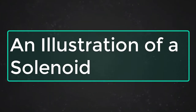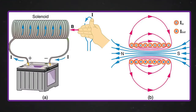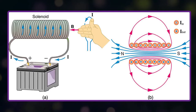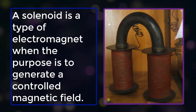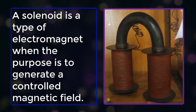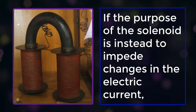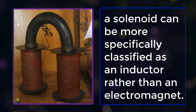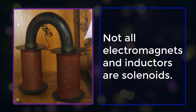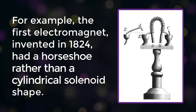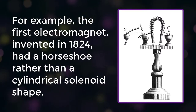An illustration of a solenoid shows the magnetic field created by a seven-loop solenoid in cross-sectional view, described using field lines. A solenoid is a type of electromagnet when the purpose is to generate a controlled magnetic field. If the purpose is instead to impede changes in electric current, a solenoid can be more specifically classified as an inductor rather than an electromagnet. Not all electromagnets and inductors are solenoids — for example, the first electromagnet invented in 1824 had a horseshoe rather than a cylindrical solenoid shape.